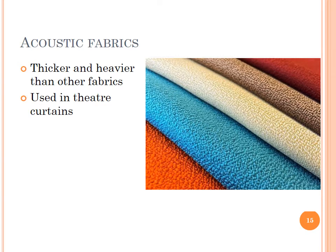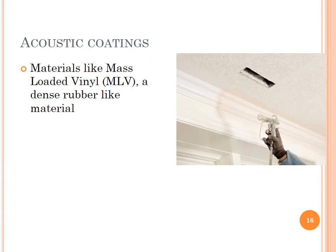Acoustic fabrics are thicker and heavier than other fabrics and are used in theatre curtains. Acoustic coatings use materials like mass-loaded vinyl (MLV), a dense rubber-like material, as acoustic coating.